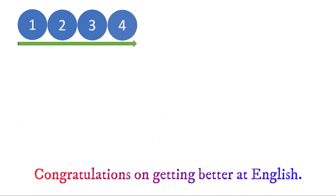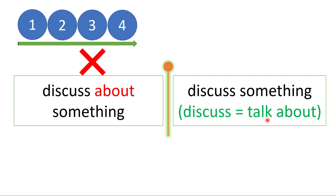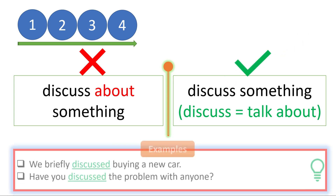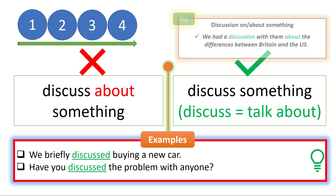Shall we look at the fourth one? 'Discuss about something' — this is one of the most common mistakes. 'Discuss about something' is wrong. The correct way is 'discuss something.' The word 'discuss' itself means 'talk about,' so if you use 'about' again, that is redundant. 'Discuss about' means 'talk about about' — that's not necessary. So just say 'discuss something.' For example: 'We briefly discussed buying a new car' — no 'about' there. 'Have you discussed the problem with anyone?' — not 'have you discussed about the problem.'